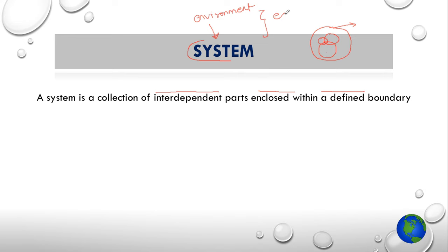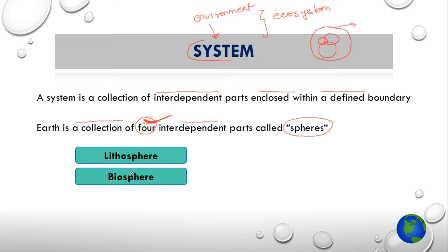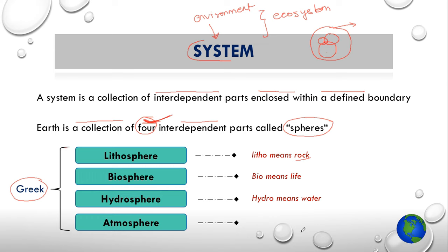Earth is a collection of four interdependent parts and these parts are called spheres. So basically there are four interdependent spheres in planet earth. First is lithosphere, second is biosphere, third is hydrosphere, and fourth is atmosphere. The names of these spheres have come from the Greek word where litho means rock, bio means life, hydro stands for water, and atmos stands for vapors and air.